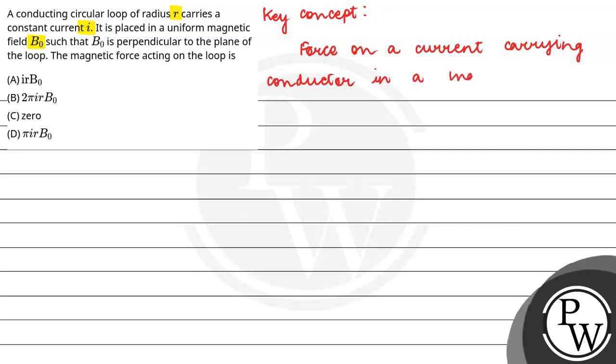In a magnetic field. So force, how much is it? In a current carrying conductor which is placed in a magnetic field, it is F equals I into L cross B.